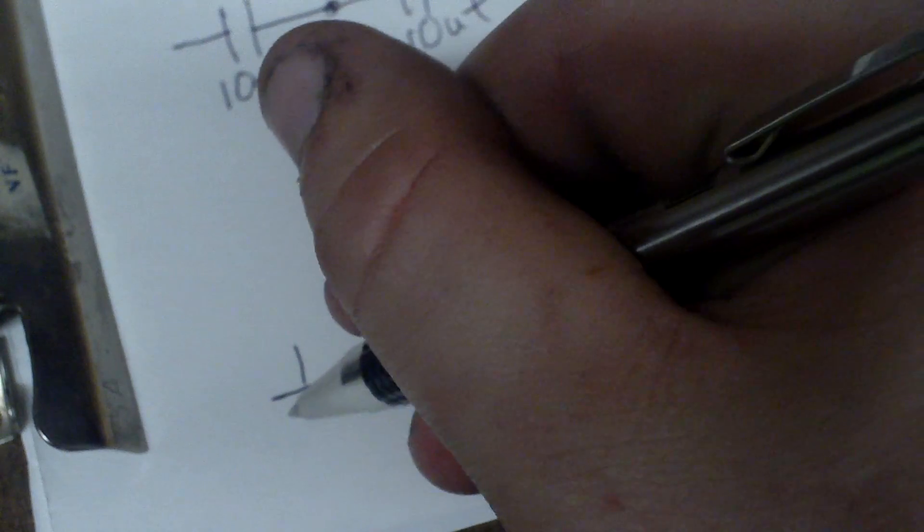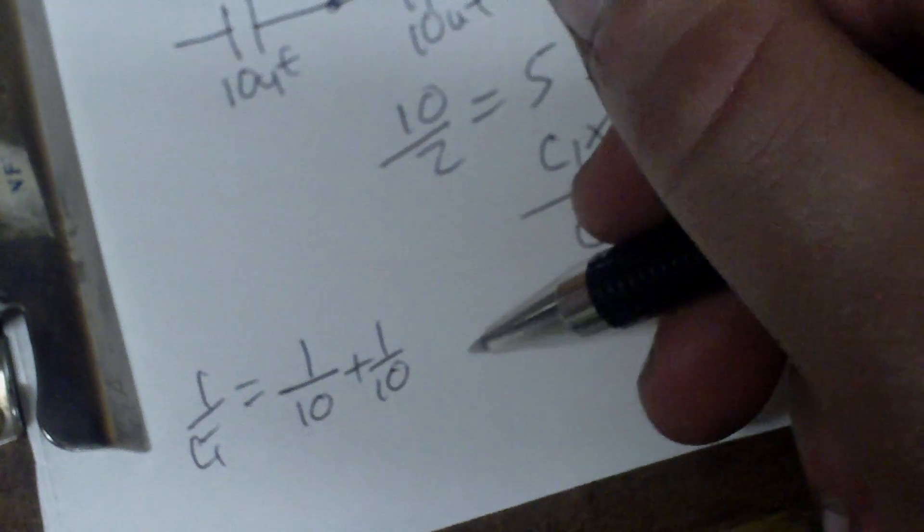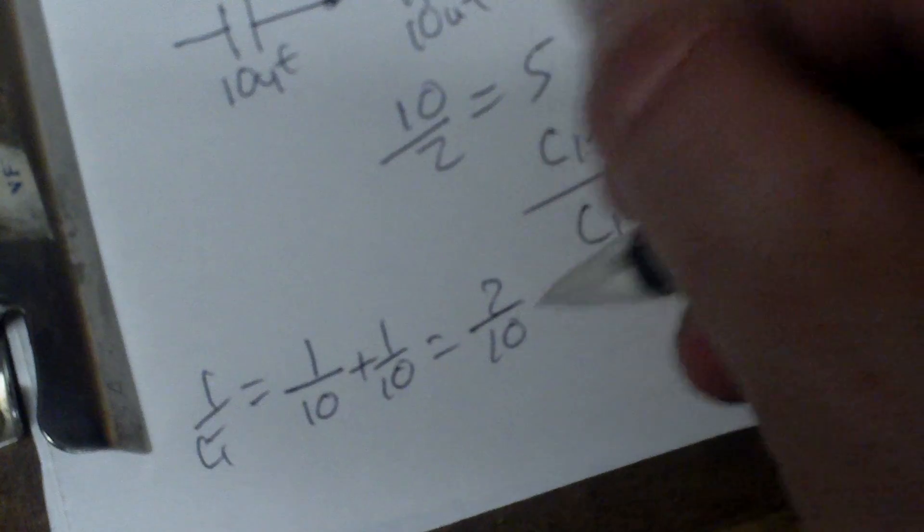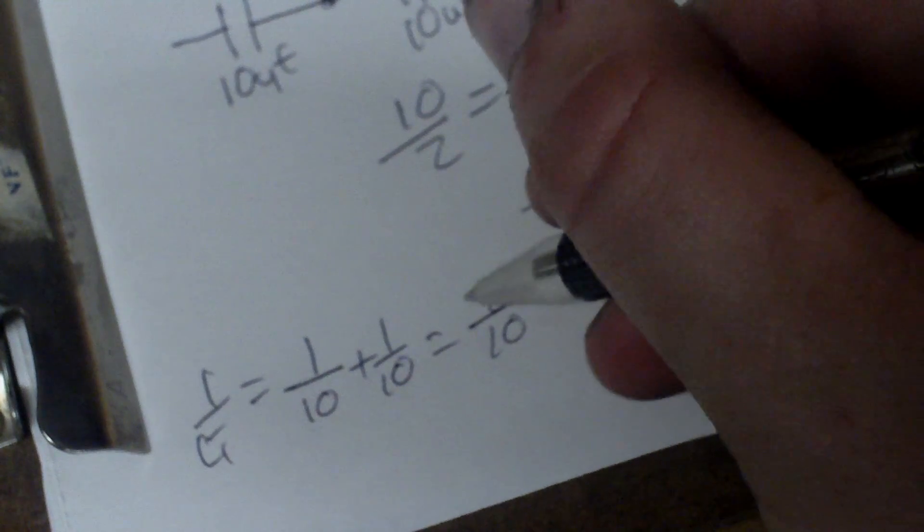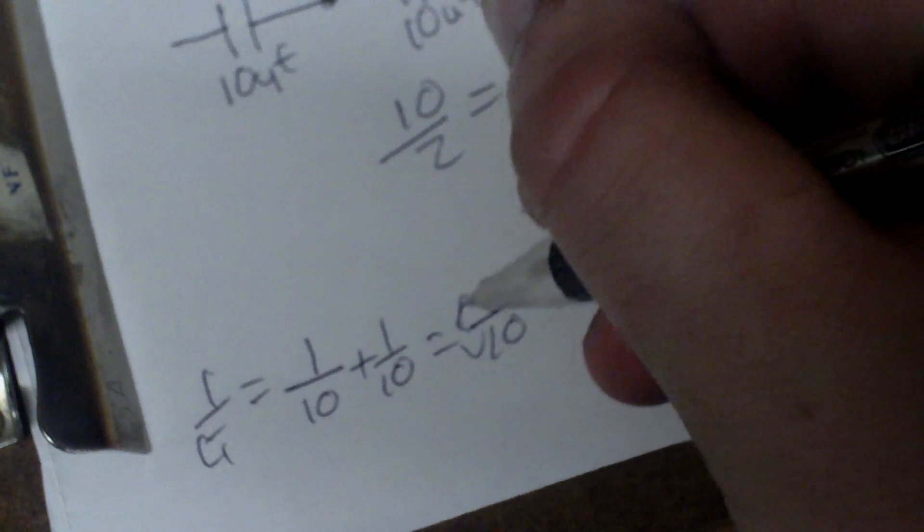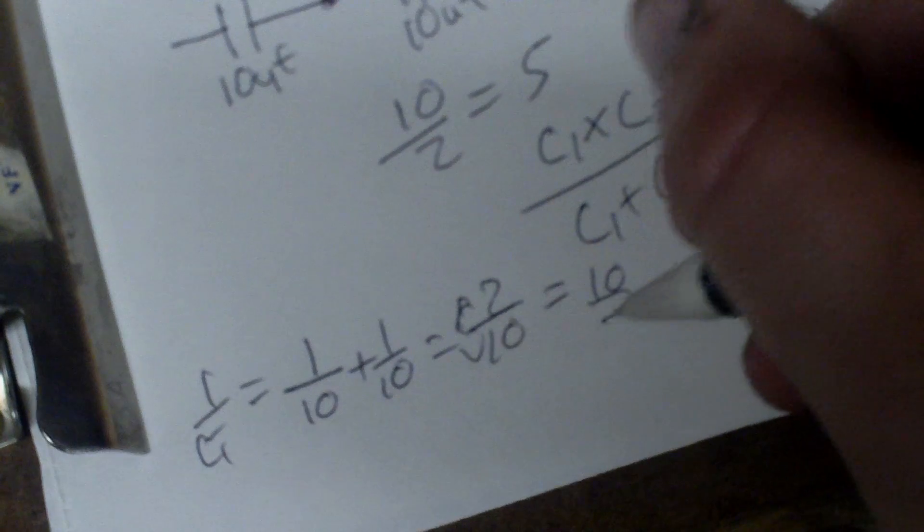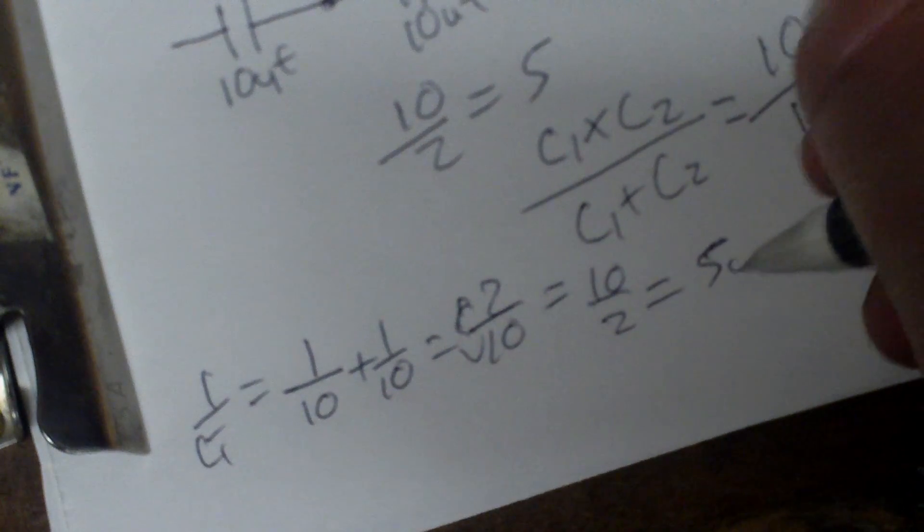Now, if you've got more than two, what you'll do, you'll do the reciprocal. 1 over 10 plus 1 over 10 like this. Let's see here. 1 over C total equals this. Now, this will equal 2 over 10. And since it's reciprocal, you've got to flip it. Let's flip, so it's 10 divided by 2 equals 5 microfarad.